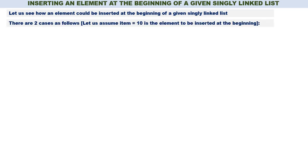In this video we will discuss how to insert an element at the beginning of a given singly linked list. Let us see how an element could be inserted at the beginning. There are two cases. We will discuss two cases, and let us assume item is equal to 10 is the element to be inserted at the beginning.